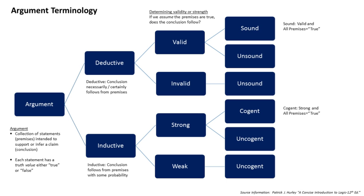Deductive arguments are evaluated in terms of their validity and soundness. An argument is valid if it is impossible for its premises to be true while its conclusion is false — in other words, the conclusion must be true if the premises are true. An argument can be valid even if one or more of its premises are false. An argument is sound if it is valid and the premises are true. It is possible to have a deductive argument that is logically valid but not sound. Fallacious arguments often take that form.